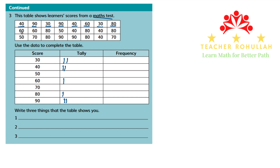Coming to the second row, we have 60 — one for 60. Then again 60 — one more for 60. Then 80 — one more tally for 80. We have 50 — the first one for 50. Again 40. Again 80. Then 40 — let me underline — we have 40. Then again 80.